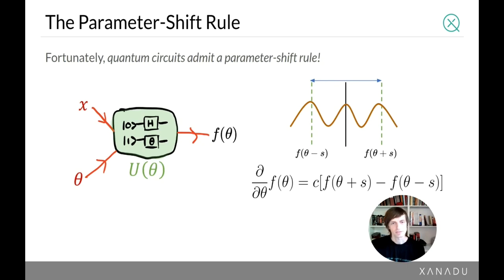Very, very fortunately, it happens to be the case that quantum circuits admit a parameter shift rule. Now, the basic intuition behind this is that quantum circuits are performing interference of vectors in complex vectors in very large dimensional spaces, and complex numbers in particular have this trigonometric structure associated to them. So that means that quantum circuits inherit a lot of this trigonometric properties, including the parameter shift rule.